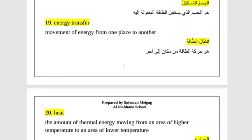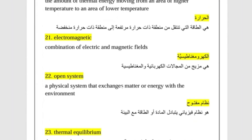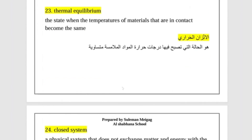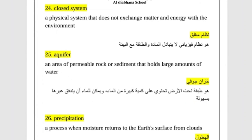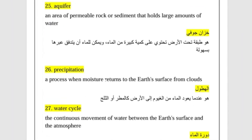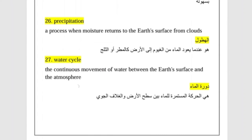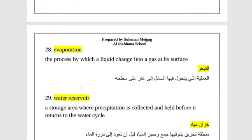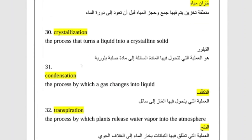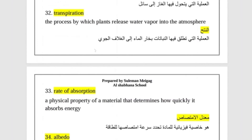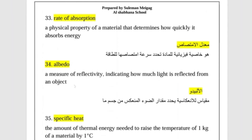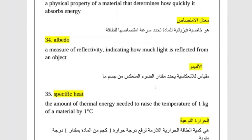Energy transfer and heat (harara) — what is it? Electromagnetic spectrum, field, open system. When heat moves, eventually both sides reach equilibrium. Closed system. Aquifer. Precipitation. Water cycle — how water moves on the Earth. Water reservoir. Crystallization, condensation, transpiration — water from plants (Nabat) is called transpiration. Albedo — how things reflect light; how they absorb heat. Every material has a specific heat. Reflectivity — like a mirror (muraya) — how light bounces back.